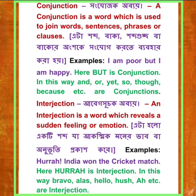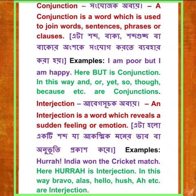Next, conjunction — in Bengali 'sanjog jok obboy.' A conjunction is a word which is used to join words, sentences, phrases, or clauses. Examples: I am poor but I am happy — here 'but' is a conjunction. In this way, and, or, yet, so, though, because, etc. are conjunctions.